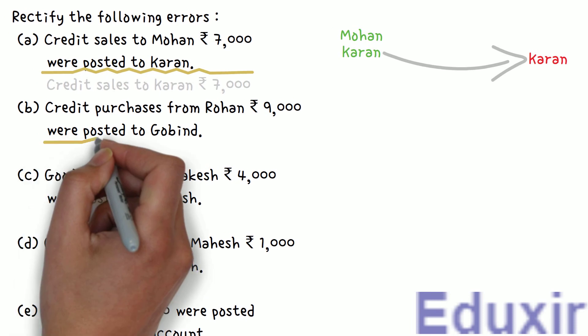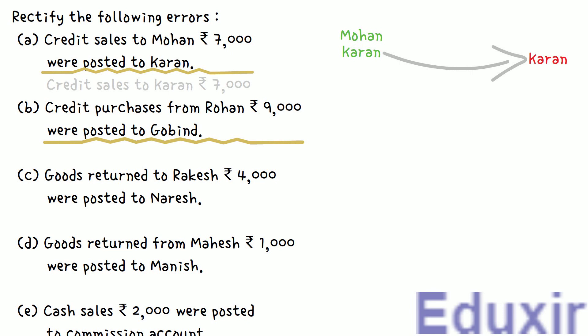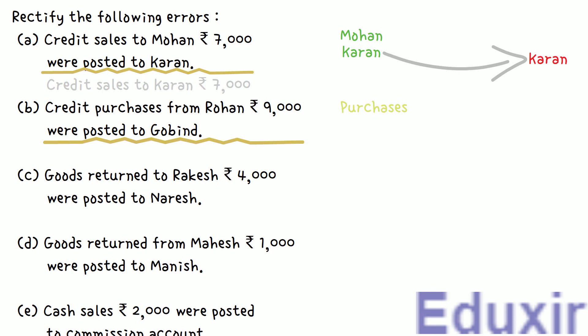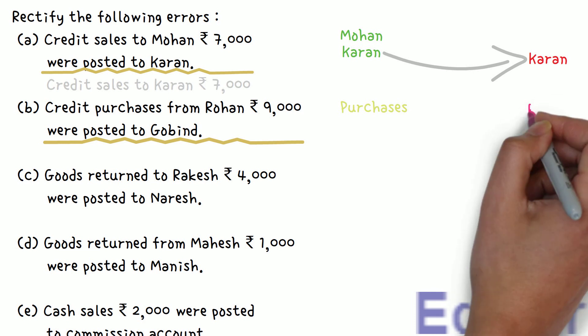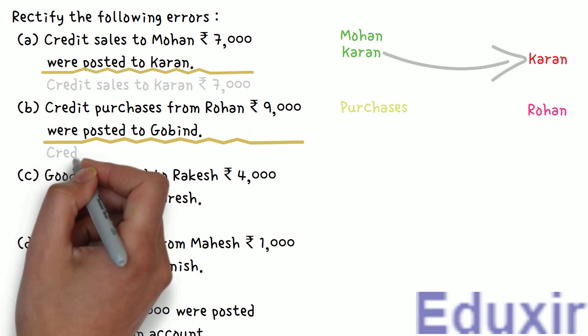Let us now take up the next error. In this case, Rs. 9,000 of credit purchases done from Rohan are posted to Gobind's account. As per the original transaction, there were Rs. 9,000 of credit purchases from Rohan — so the purchase account should be debited. At the same time, as these purchases are done on credit from Rohan, Rohan becomes the creditor of the business and hence Rohan's account should be credited. As this entry is wrongly posted to Gobind's account instead of Rohan's account, as per the second guiding principle, we assume that Gobind's account is posted with the correct amount — Rs. 9,000 — on the credit side.